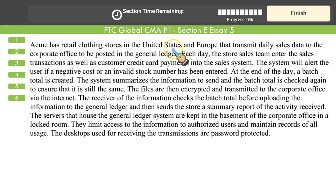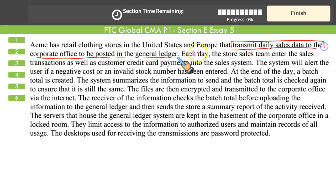Acme has retail clothing stores in the United States and Europe that transmit daily sales data to the corporate office to be posted in the journal ledger. This should alert us that data is being sent from one country to another, so this company needs encryption. Sales data is confidential — if your competitors get their hands on this data, they might poach your customers away.